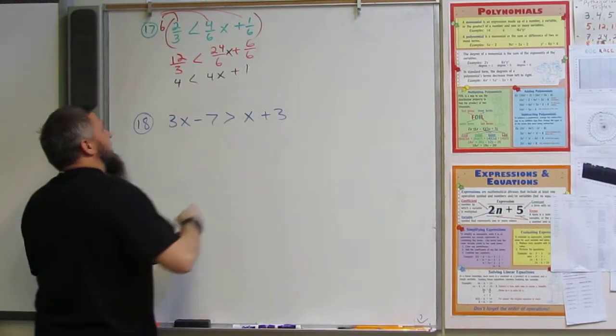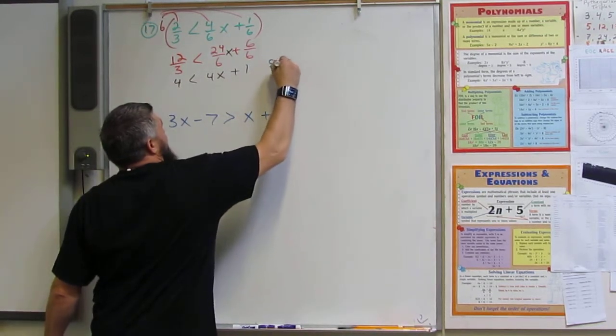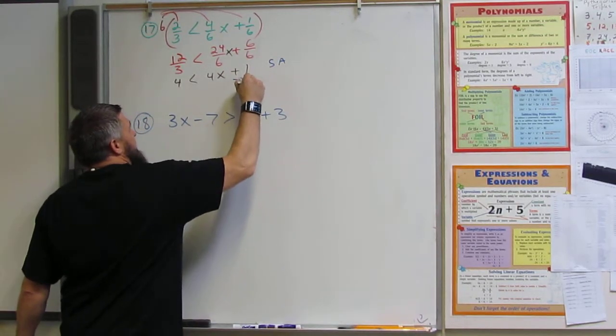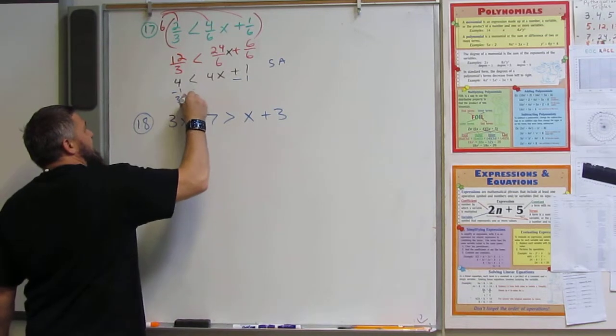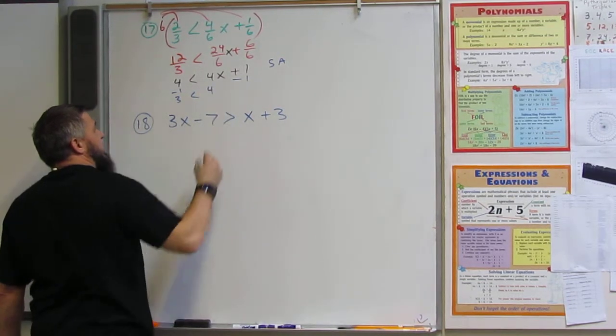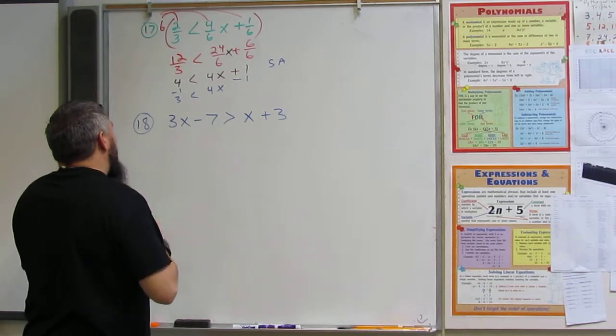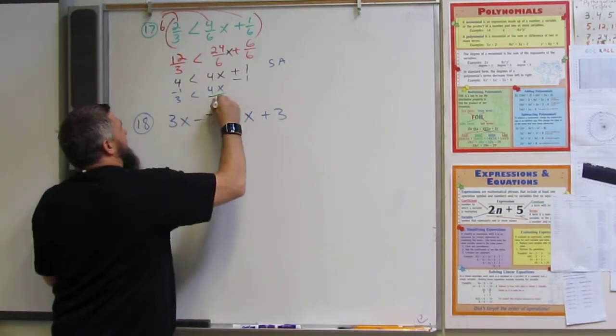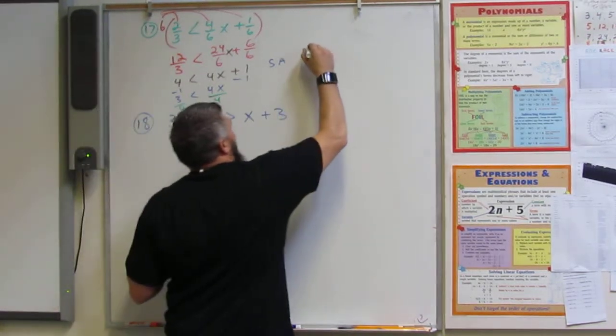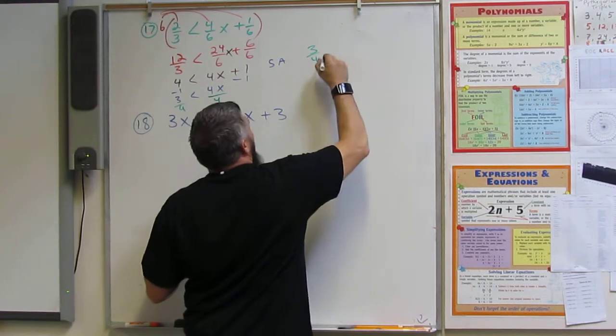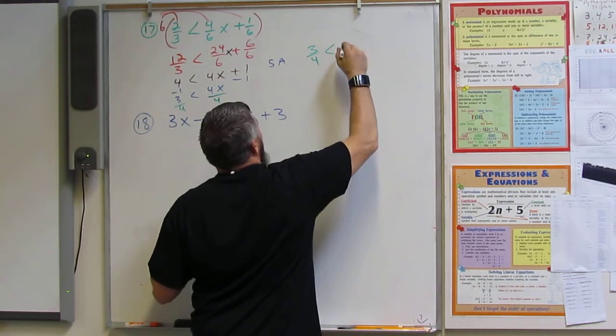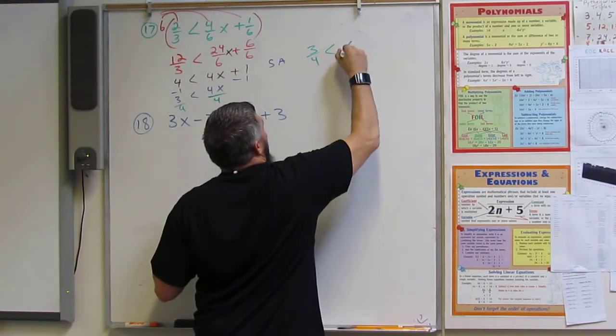And so we're going to do subtraction addition, subtract 1, subtract 1. I got 3 is greater than 4x. And now divide by 4, divide by 4. So I get 3/4 is greater than, or is less than, x.